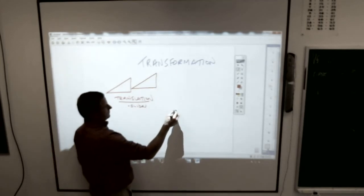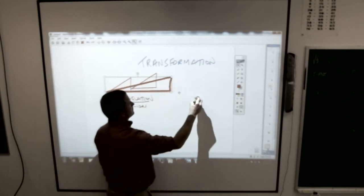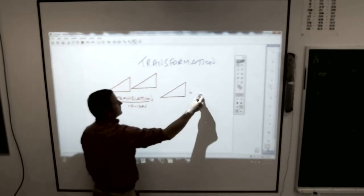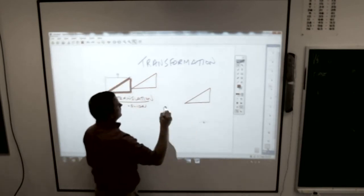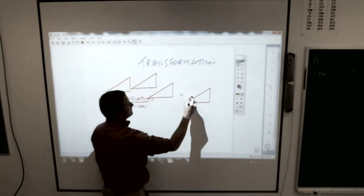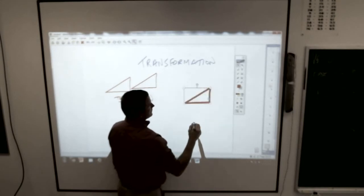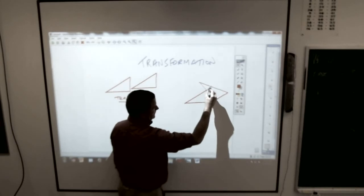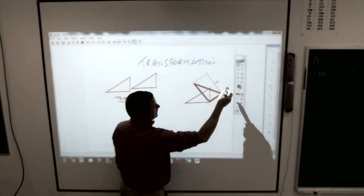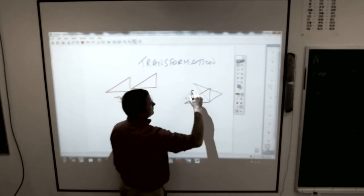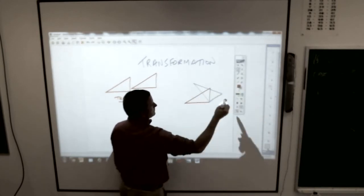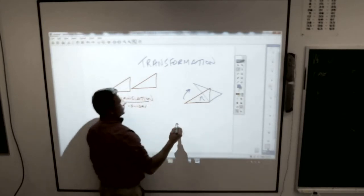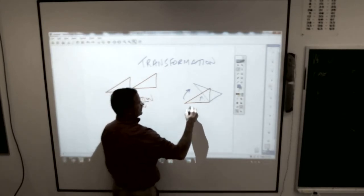If you take your shape and it spins, actually it spins about a point like this, it spins. Rather than calling it a spin, that is a rotation.